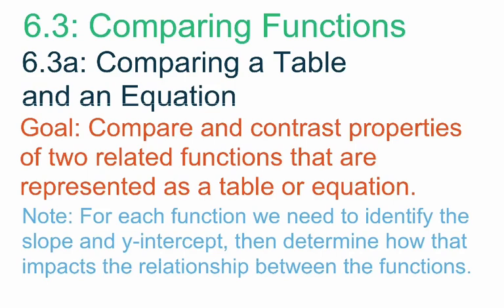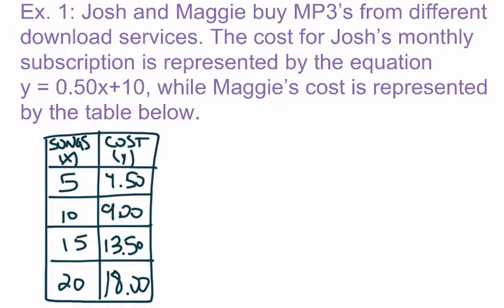We're identifying the slope and the y-intercept, and we'll be using that information to answer a final question the problem might pose. Our first example: Josh and Maggie buy MP3s from different download services. The cost for Josh's monthly subscription is represented by the equation y equals 0.50x plus 10, while Maggie's cost is represented by the table below.